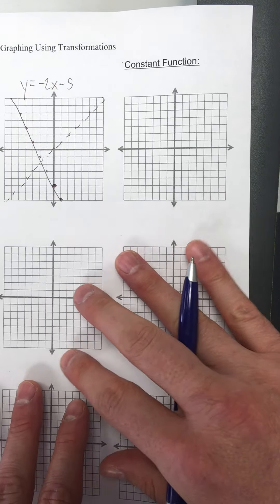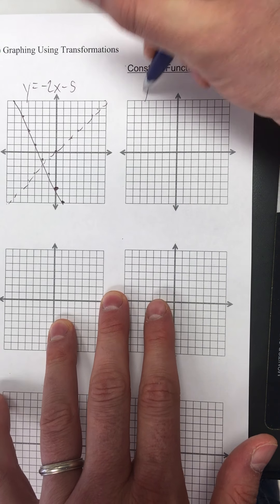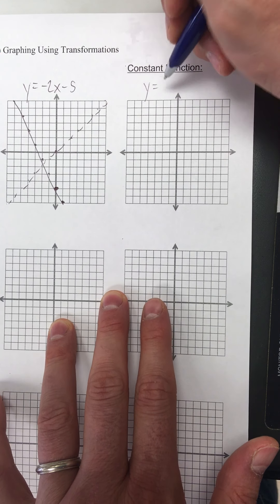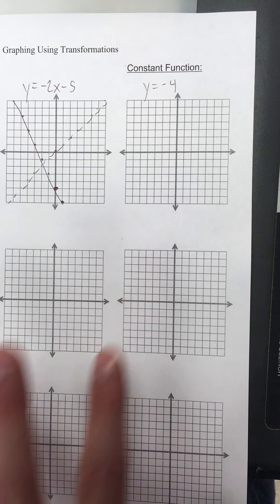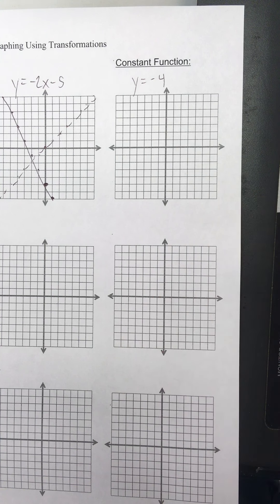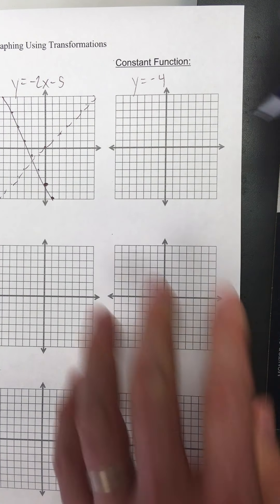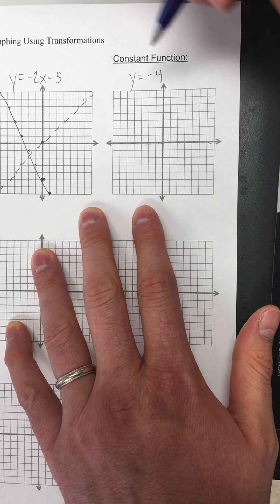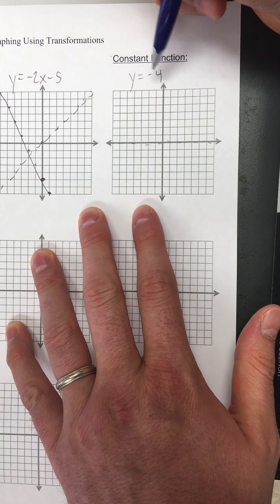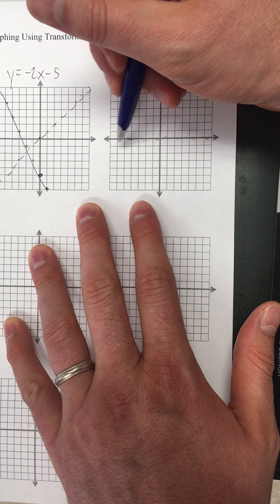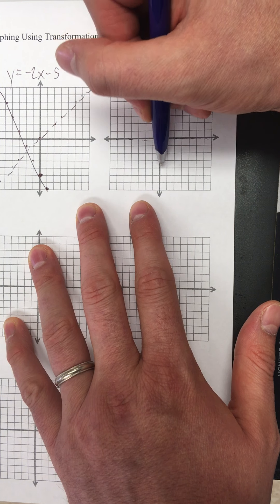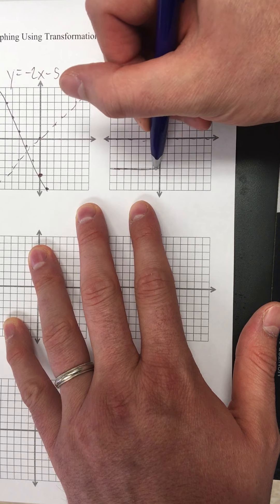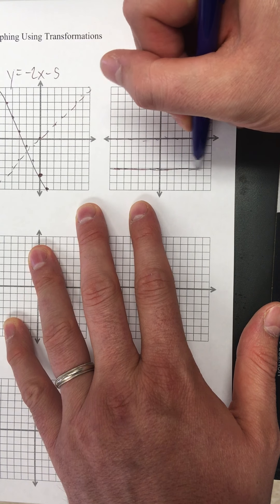Now, constant functions — those are easy. Those are equations like y equals some number. So if I had y equals negative four: do you remember what kind of line constant functions make? They make a horizontal line. The parent function would just be right on top of the x-axis. This constant function is going to be a horizontal line going through negative four. There's my answer.